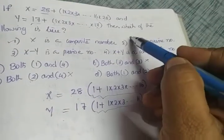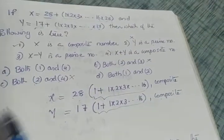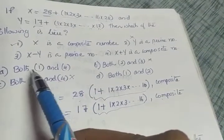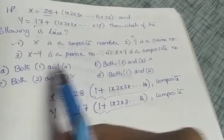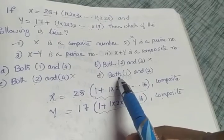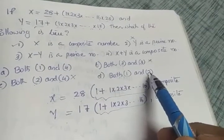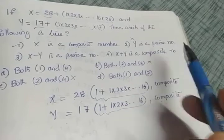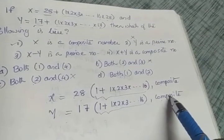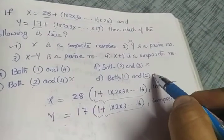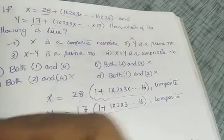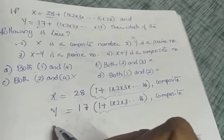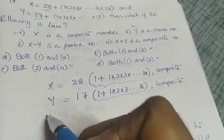So x is composite and y is also composite — meaning statement 2, 'y is a prime number,' is false. This lets us eliminate option D as well, since option D claims both statements 1 and 2 are true, but y is composite, not prime.